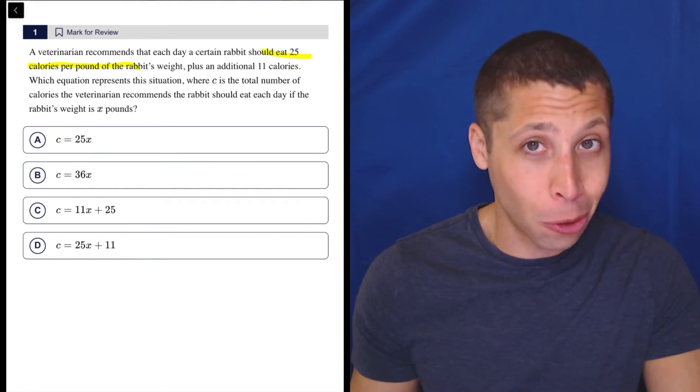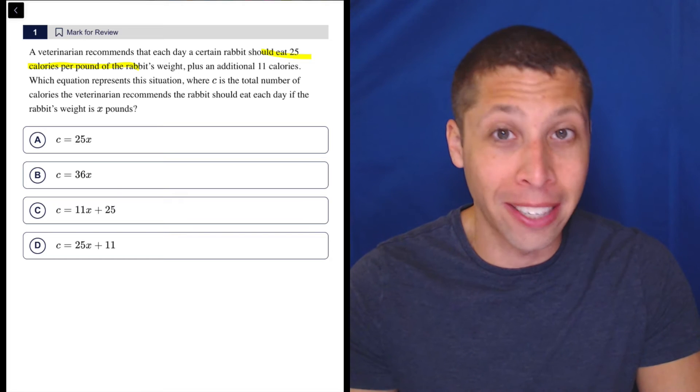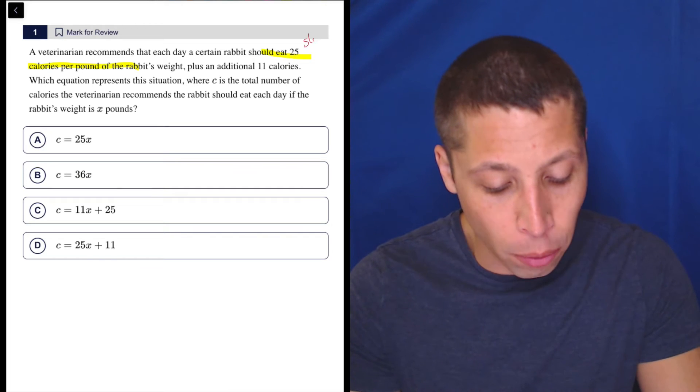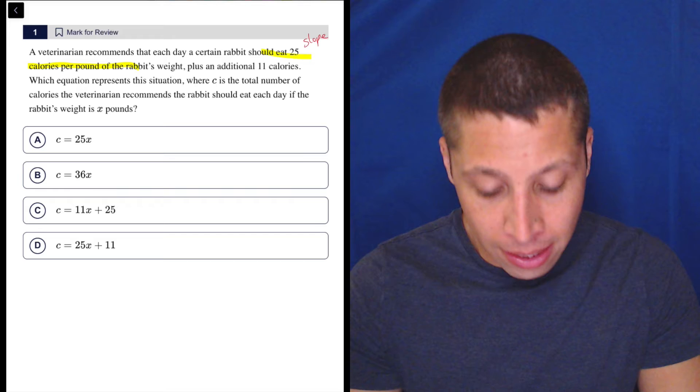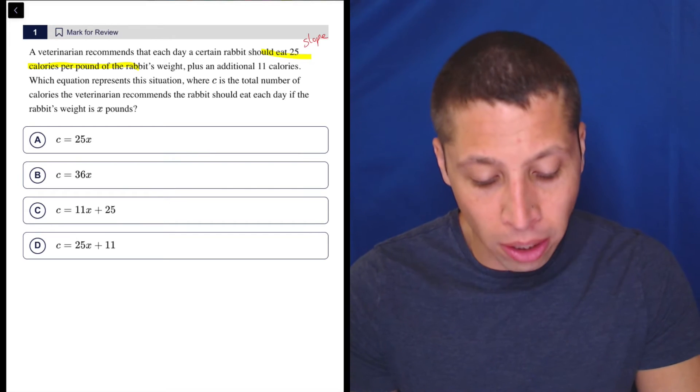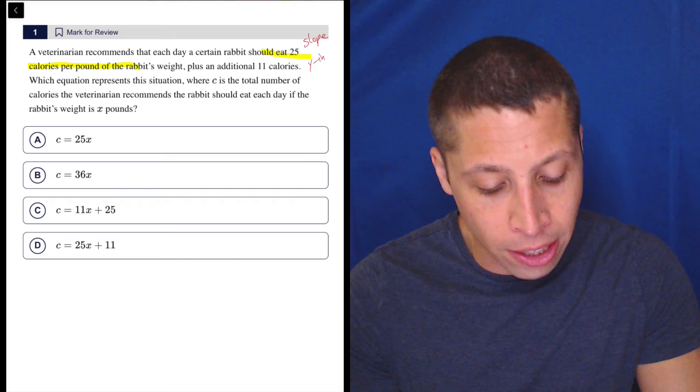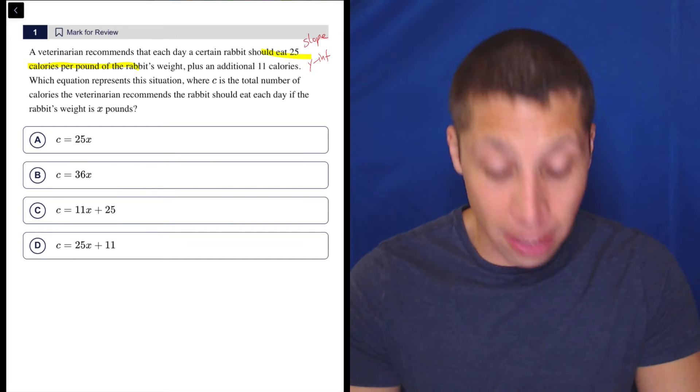We can tell just from the choices that we're not going to deal with anything more complicated like a quadratic equation, so this is going to be some sort of slope. Continuing, we have the slope plus an additional 11 calories. Well, that's your y-intercept. So we're basically building a line.